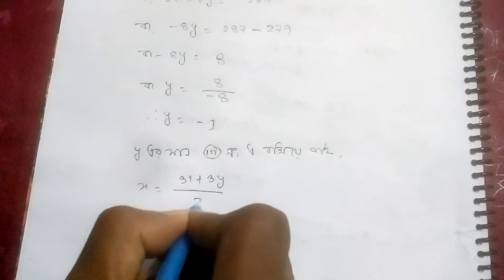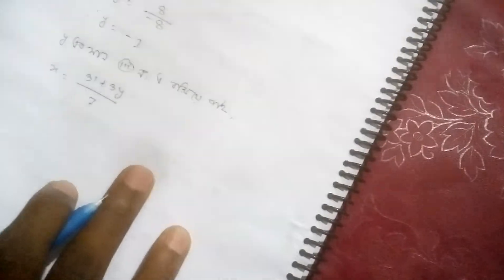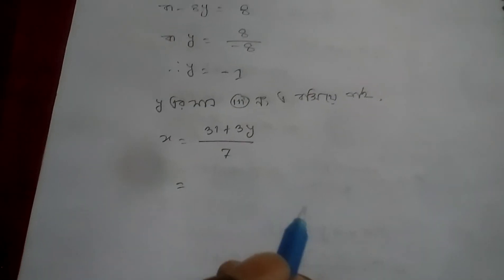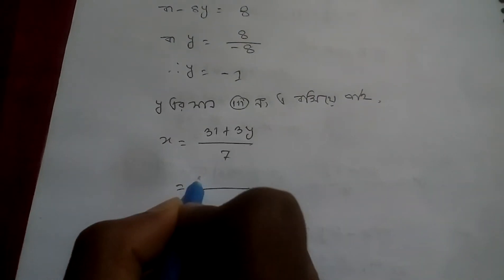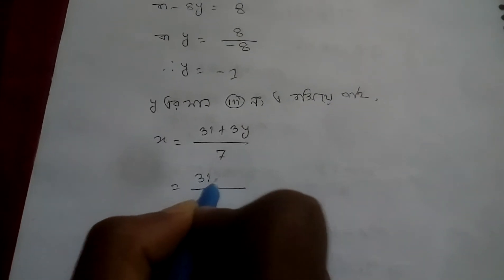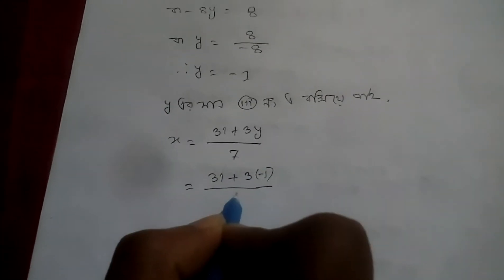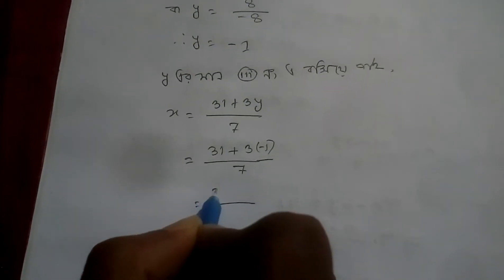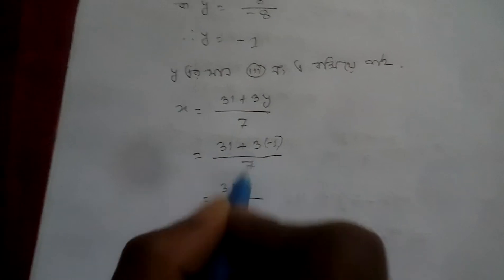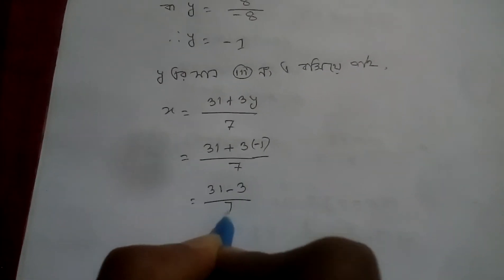3x equal to 31 plus 3x. I am going to add minus 7, I am going to add minus 7 by 7.